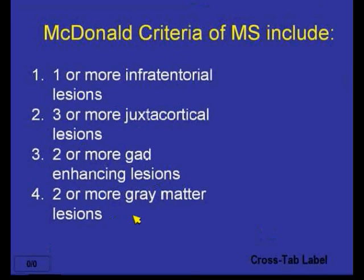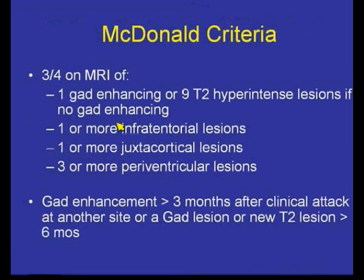Most people voted for one or more infratentorial lesions, and that is indeed the correct answer. The McDonald criteria specifies one gadolinium-enhancing lesion or nine T2-weighted hyperintense lesions if there's no gadolinium enhancement. I teach my fellows you really have to count MS plaques up to nine, then say there are more than nine — that way we give the clinician feedback that the McDonald criterion is met.